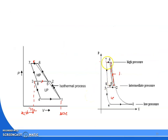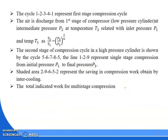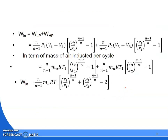So we need to find the total work in multi-stage compression. With clearance volume considered, the work for the low-pressure cylinder is: W = [n/(n-1)] × P1(V1 - V4) × [(P2/P1)^((n-1)/n) - 1], where (V1 - V4) is the effective swept volume, P2 is the delivery pressure, and P1 is the suction pressure.